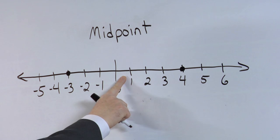Once we get to the middle two points, you want to find the midpoint of those two points, which would be one half.